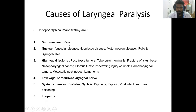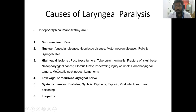The supranuclear lesion is very rare. Nuclear lesions include vascular diseases, neoplastic diseases, motor neuron diseases, polio, and syringobulbia. High vagal lesions are caused by posterior fossa tumors, tubercular meningitis, fracture base of skull, nasopharyngeal cancer, glomus tumor, penetrating injury of the neck, parapharyngeal tumors, metastatic neck nodes, and lymphoma.